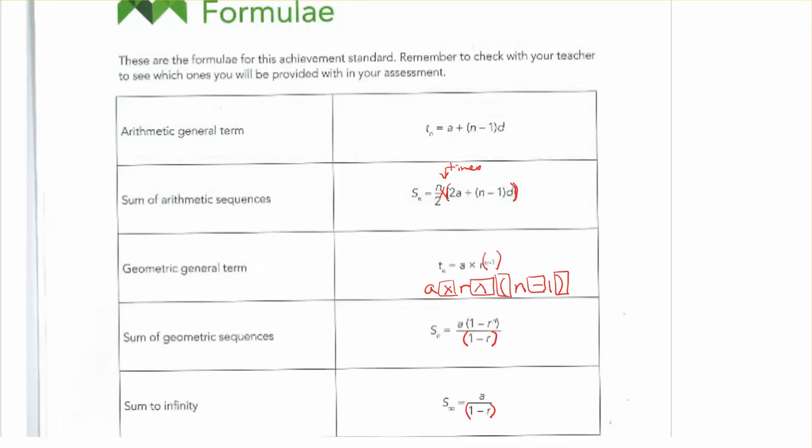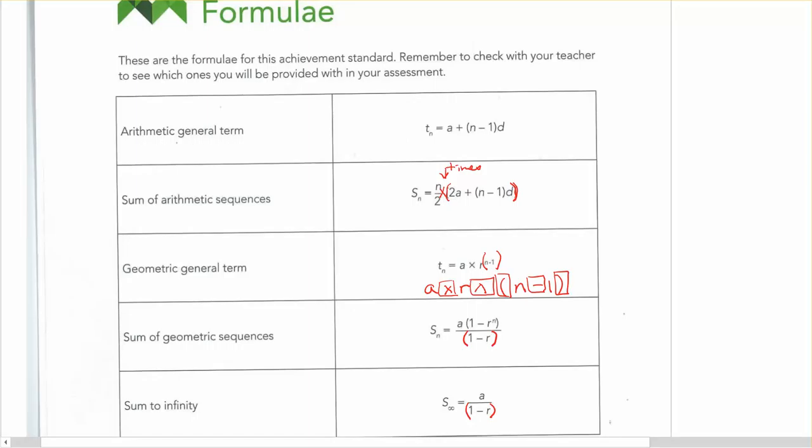So if you remember back to your formula sheet, you'll see that you're given these formulas. The arithmetic general term here, you've got t is equal to a plus bracket n minus 1 bracket times d.